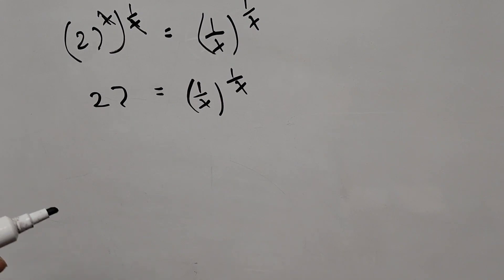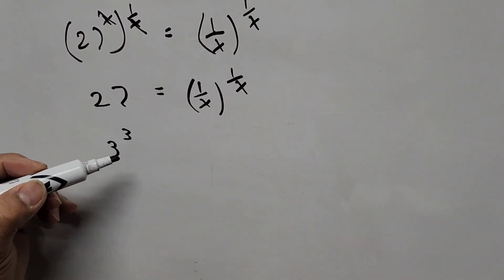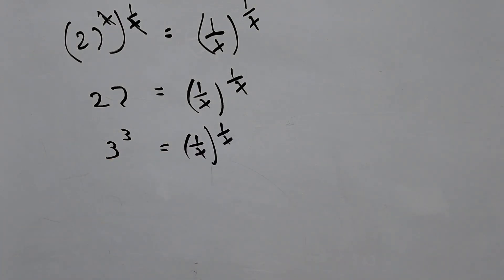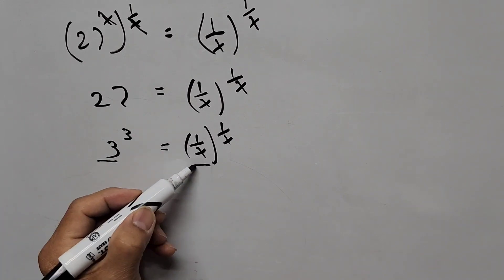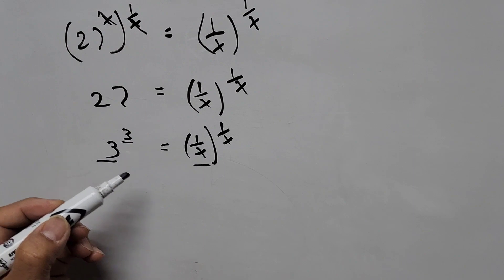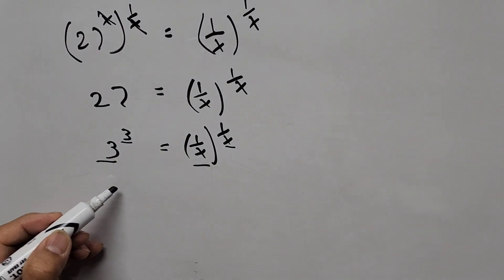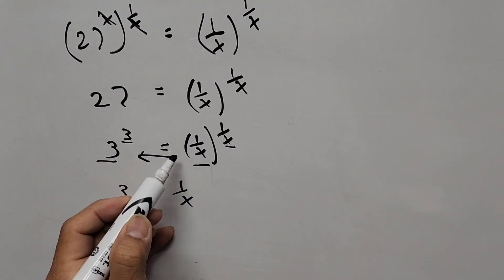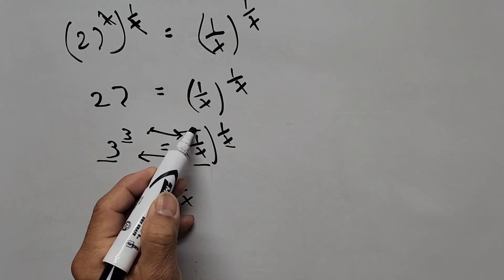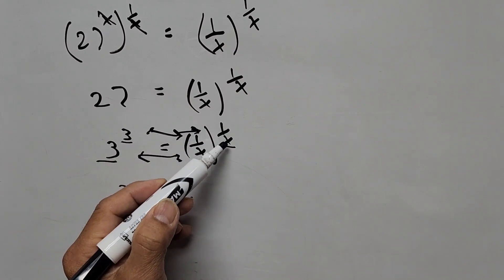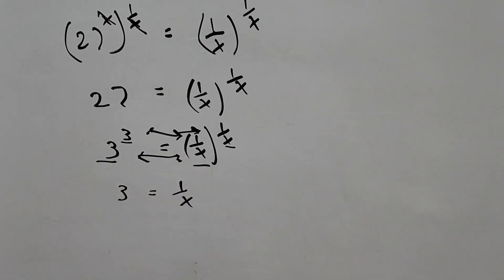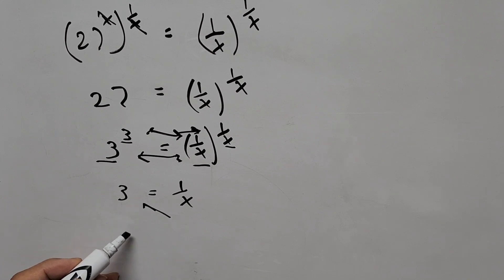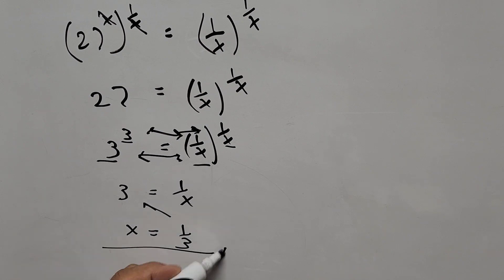27 is now written as 3 cubed, since 3 cubed is 27. The right-hand side remains the same: 1 over x to the exponent 1 over x. By direct comparison, we can tell that 3 equals 1 over x — the base corresponds to the base, and the exponent corresponds to the exponent. Solving for x, we take the inverse of both sides, so x equals 1 third. That is our final answer.